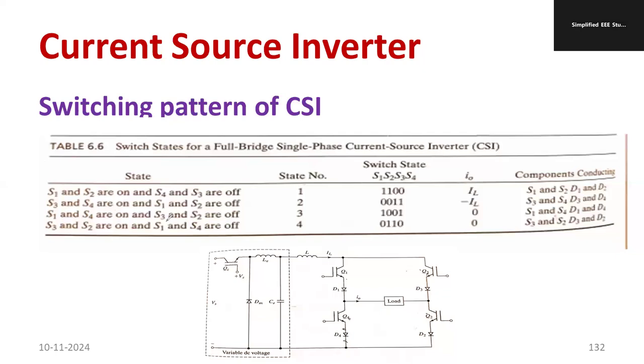We will talk about when S3 and S4 are OFF and S1 and S4 are ON. That condition is called state number 3. Switching operation is 1001, so output is 0. When S3 and S2 are ON and S1 and S4 are OFF, the condition is 0110, output again 0. Remember, you are getting output only during specific conditions such as state number 1 and 2. Rest of the condition, output is 0 only.